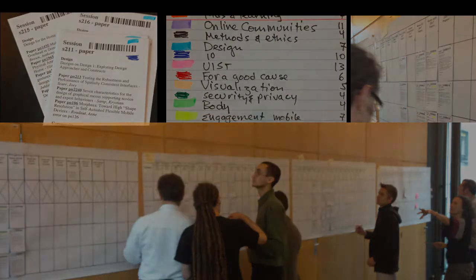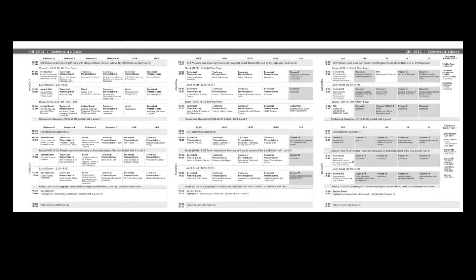In the second stage, the conference chairs refine this rough schedule to create the final program. They attempt to resolve conflicts, fix sessions with papers that don't quite fit, and generally look for ways to improve the program.